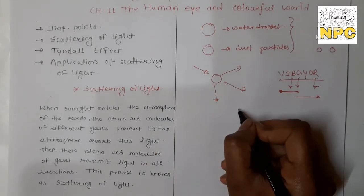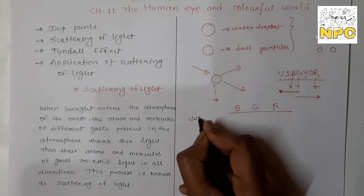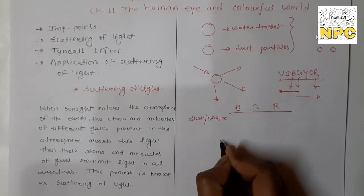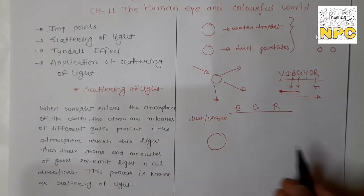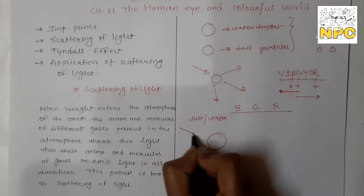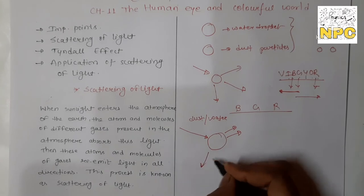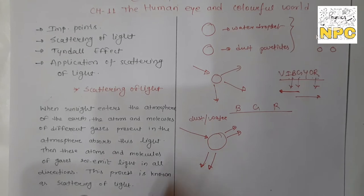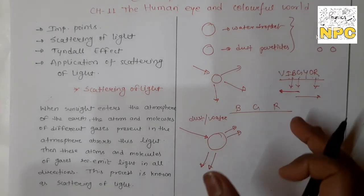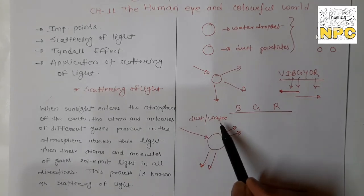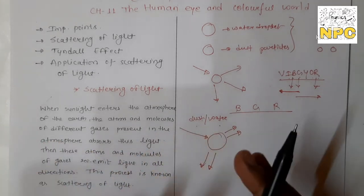Simply, consider blue, green, and red colors. Dust particles and water droplets are big in size, so their scattering is much greater as compared to small gas molecules. When sunlight is incident on dust particles, after scattering, all colors are re-emitted equally — all seven colors. White light is a combination of seven colors, so after scattering by dust/water droplet particles, all seven colors are scattered equally.